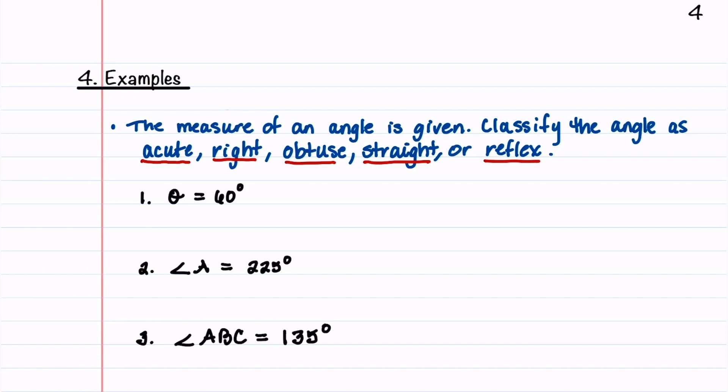So for the first example problem, theta is given as 60 degrees. So the first thing you want to do is you want to say, okay, where is theta in terms of the angles that we just looked at, in terms of 0 degrees, 90 degrees, 180 degrees, and so forth. So we notice that theta is between 0 degrees is less than 60 degrees is less than 90 degrees. So we can say that it is an acute angle.